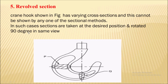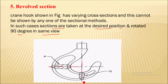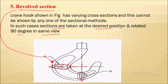Next is the revolved section. Here you can see an image of a crane hook, which has a variable cross section. Using any of the previous methods to show the section would not be sufficient in this case. So sections are taken at desired positions and rotated by 90 degrees within the same view. For example, taking a section at one position and rotating it 90 degrees gives the resulting cross section shown in the same view. That is called the revolved section — the section is shown within the same view.